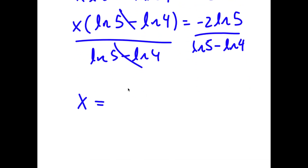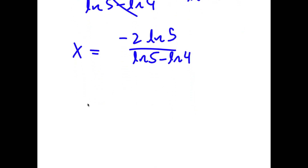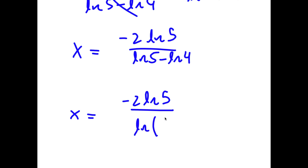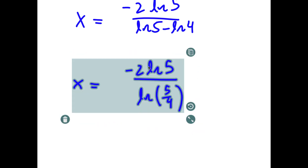Now, ln 5 minus ln 4 is the same thing as ln of 5 over 4. So x equals negative 2 times ln 5 over ln of 5 over 4. This is my answer.